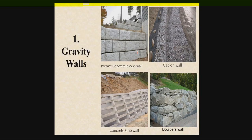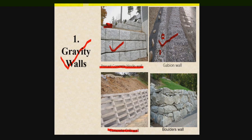There may be different cases of walls which are supporting the soil. With the help of gravity walls we can support our soil system. This is an example of a precast concrete block wall which is supporting this backfill. Another system of gravity retaining wall might be the gabion wall, in which we are using boulders and wire mesh. The third case of gravity retaining wall will be the concrete crib wall, which is supporting this backfill. We can also use a boulders wall to support different types of slopes and retaining structures.